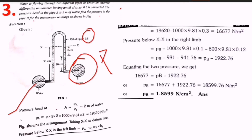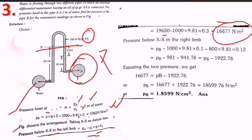Pressure head of 2 meters of water means pa equals rho times g times 2, which is 1000 times 9.81 times 2, equaling 19,620 N/m². Taking XX as datum, pressure in the left limb below XX is pa minus rho one times g times h1. Substituting: 19,620 minus 1000 times 9.81 times 0.3 gives 16,677 N/m².